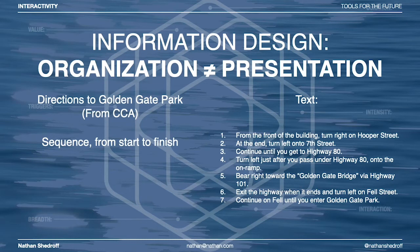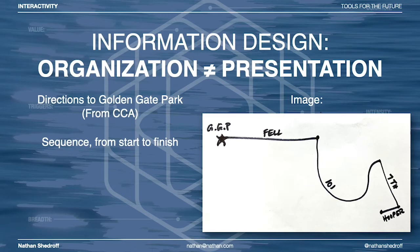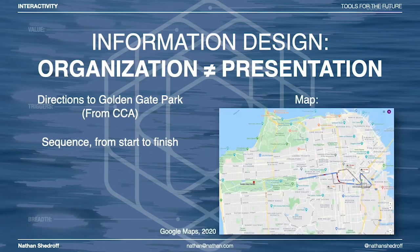Here's an example of driving directions. We're trying to get from California College of the Arts — partway between South of Market and Potrero Hill in San Francisco — to Golden Gate Park, which is on the other side of the city. This requires a sequence both in time and in directions, and there are lots of ways to present what is essentially the exact same organization by time. Here we have a textual organization giving us directions turn by turn, a visual way of expressing the exact same thing, and a map that does the same as well. The organization of this information is exactly the same in all three cases, but the presentation of it is incredibly different.